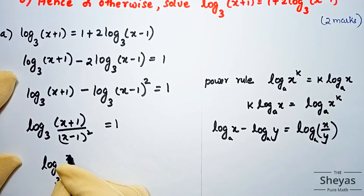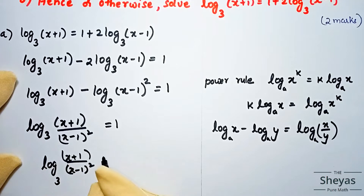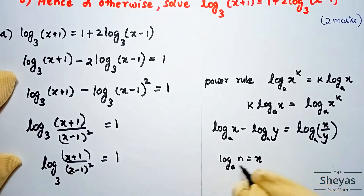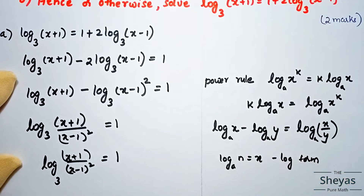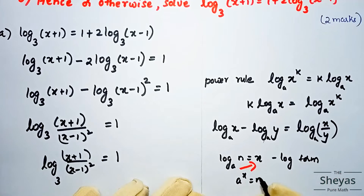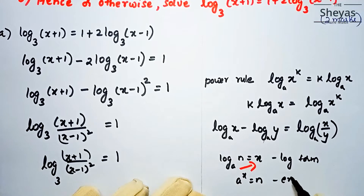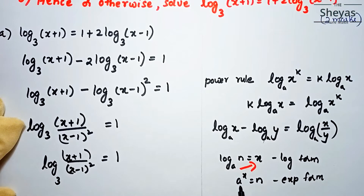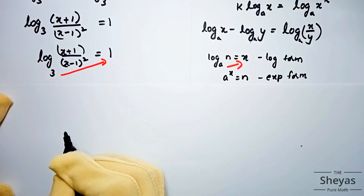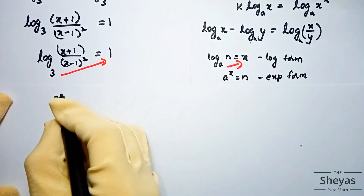So we have log base 3 of [(x+1)/(x-1)²] = 1. Now we convert this from logarithmic form to exponential form. As discussed in previous videos, the general conversion gives us 3^1 = (x+1)/(x-1)².